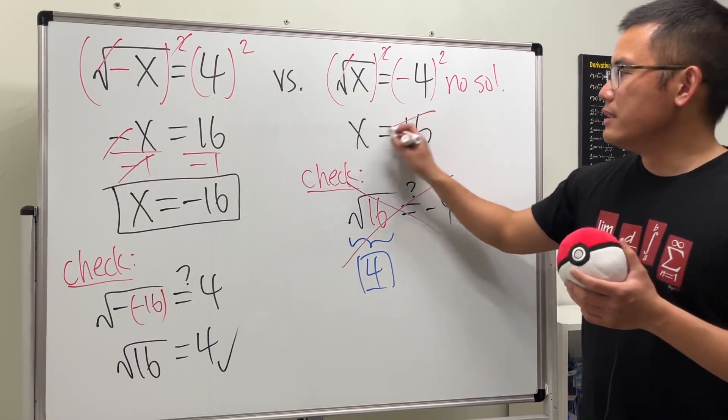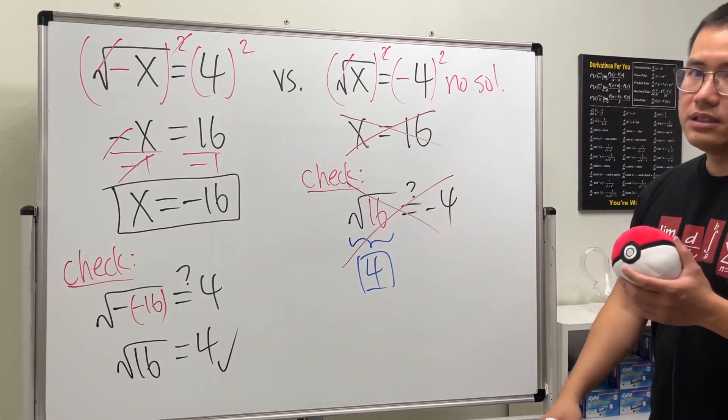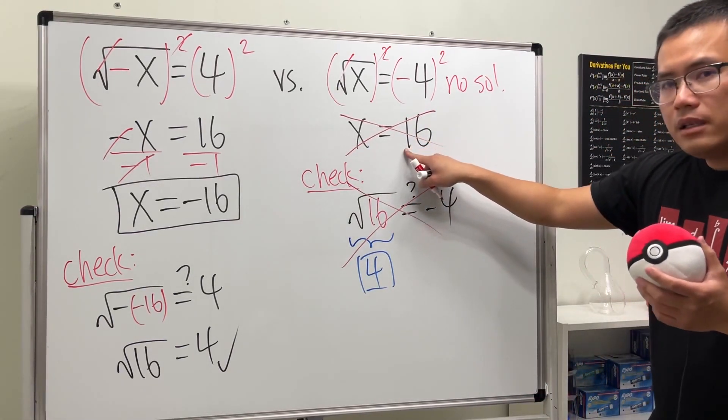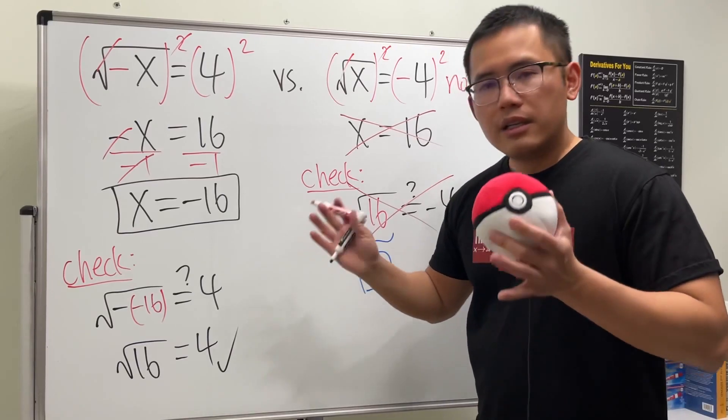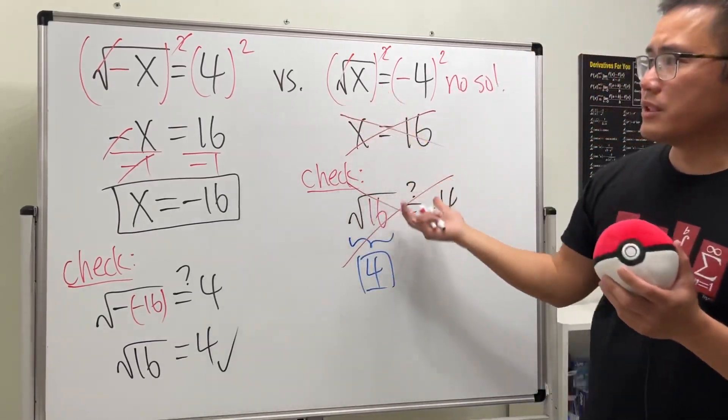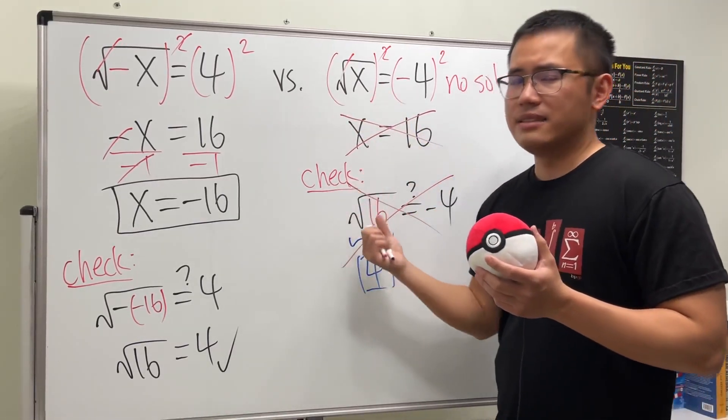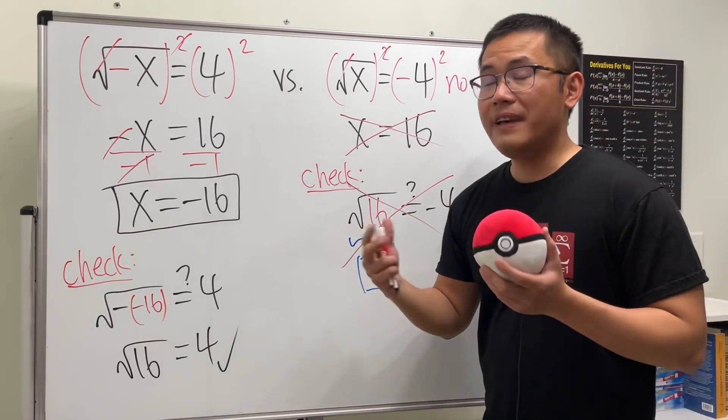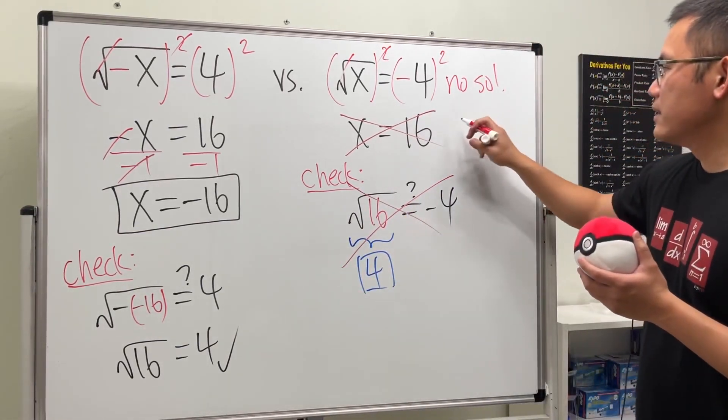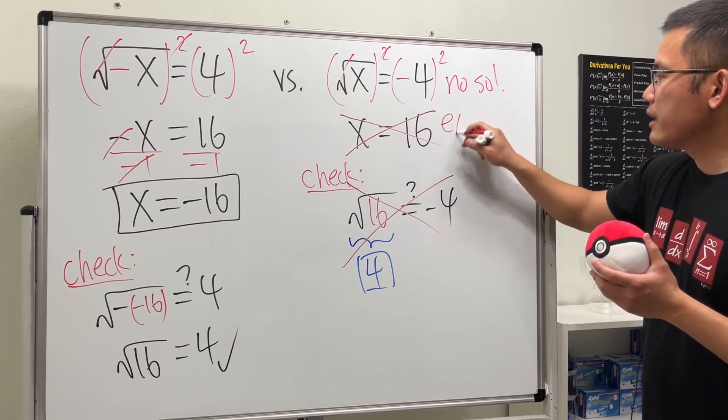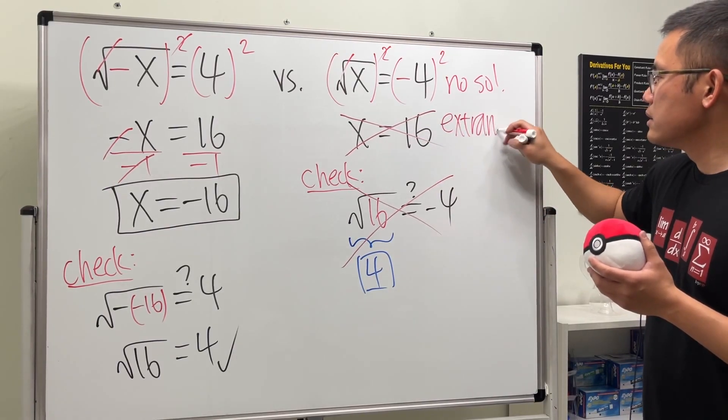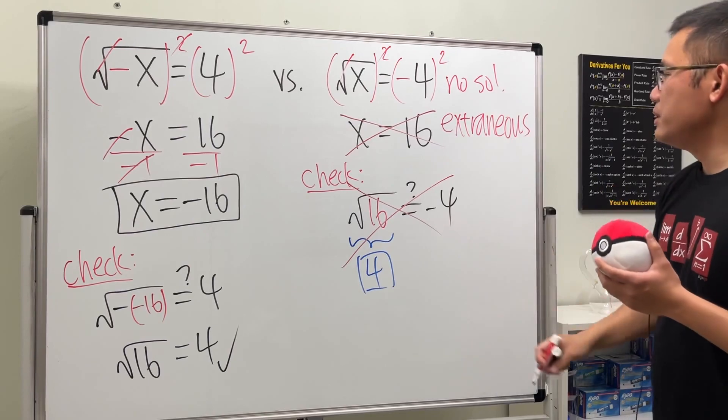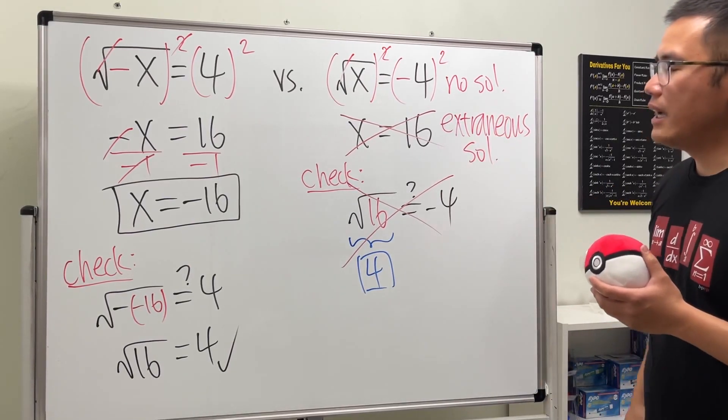Therefore this is actually not correct. This is not the answer. Just don't be too upset. Sometimes when you follow the same procedure you might get the answer right, but the answer is actually a fake answer. In that case we call this answer extraneous.